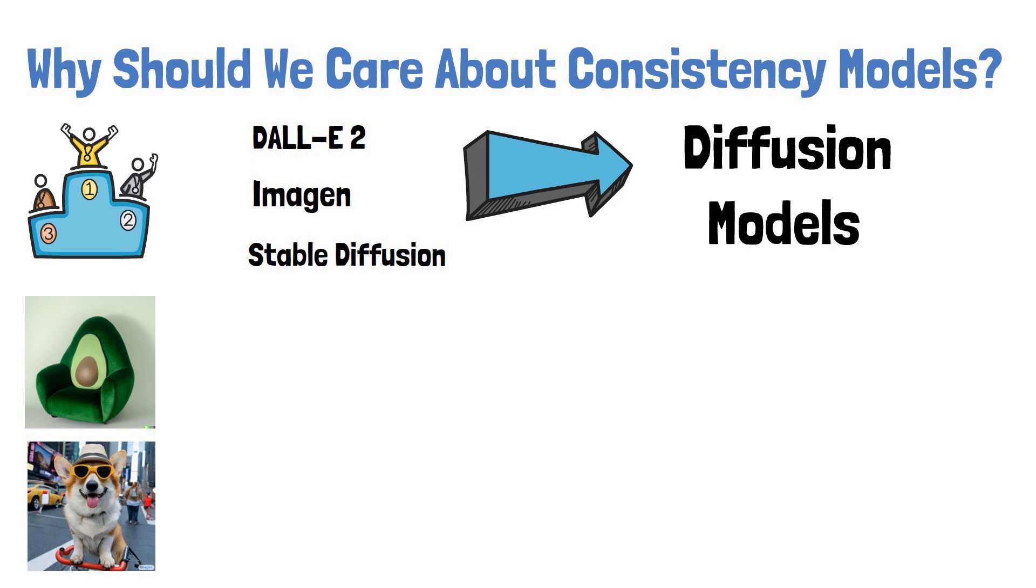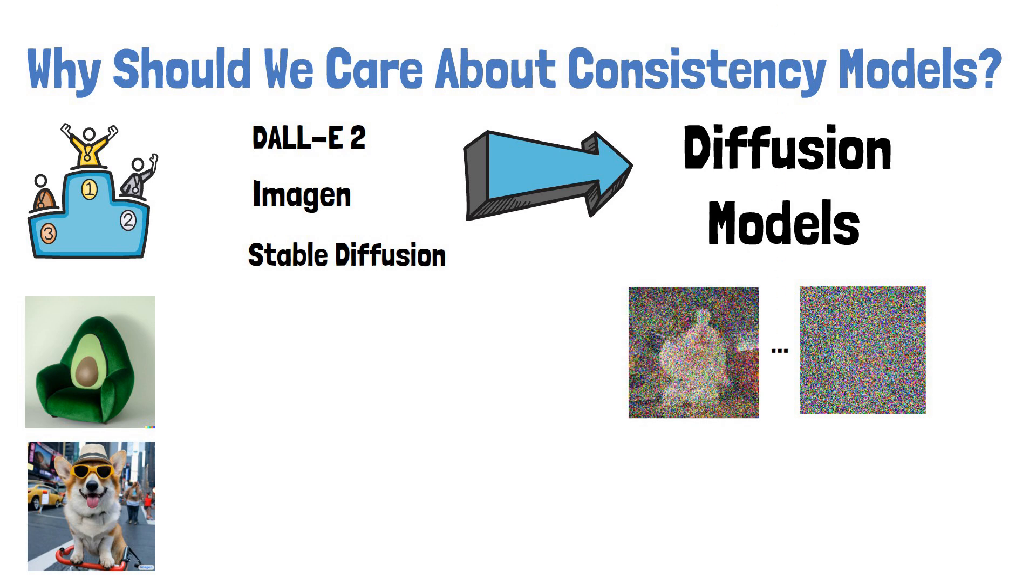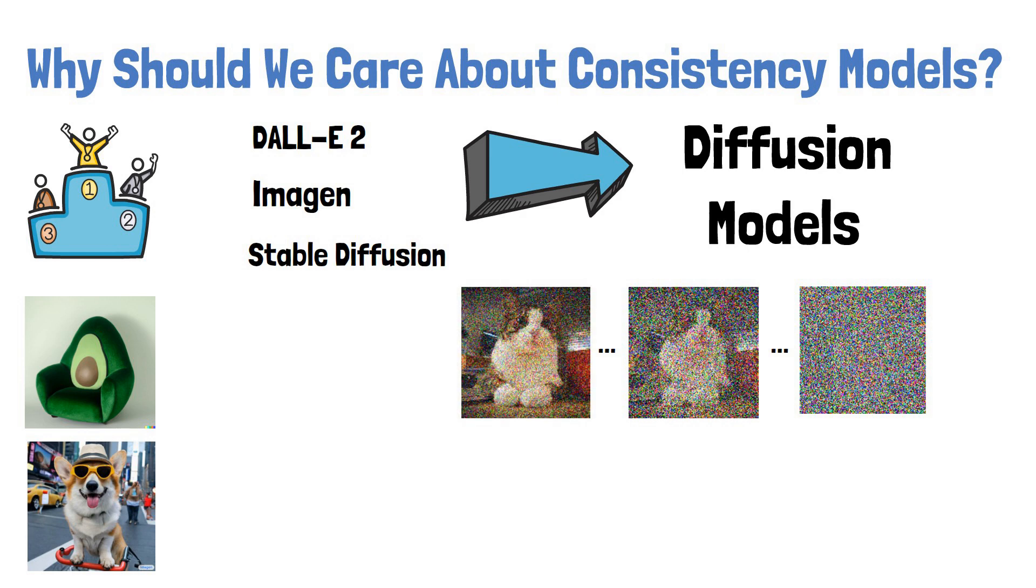Diffusion models learn to gradually remove noise from an image in order to get a clear sample. The model starts with a random noise image like we have here, and each step it removes some of the noise. The three dots imply that we skip steps in this example.